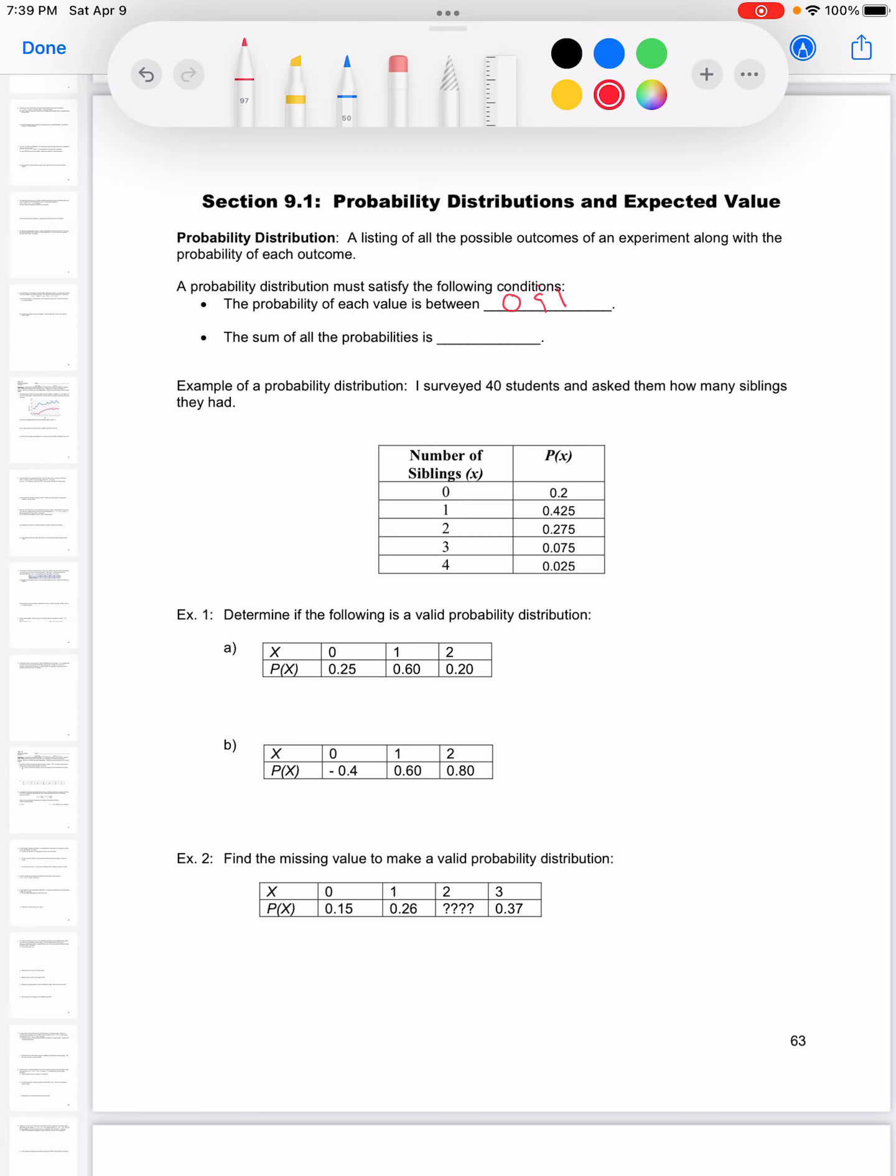And if we add up all the probabilities, the sum of that has to be 1, or you could think about that being 100%. The chance of everything combined is 100.